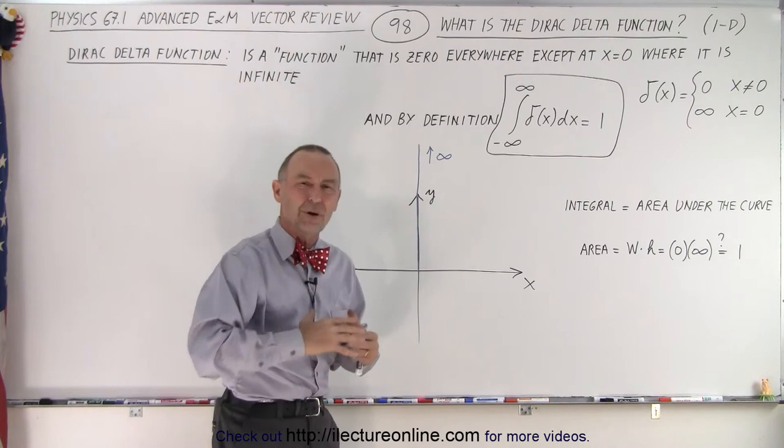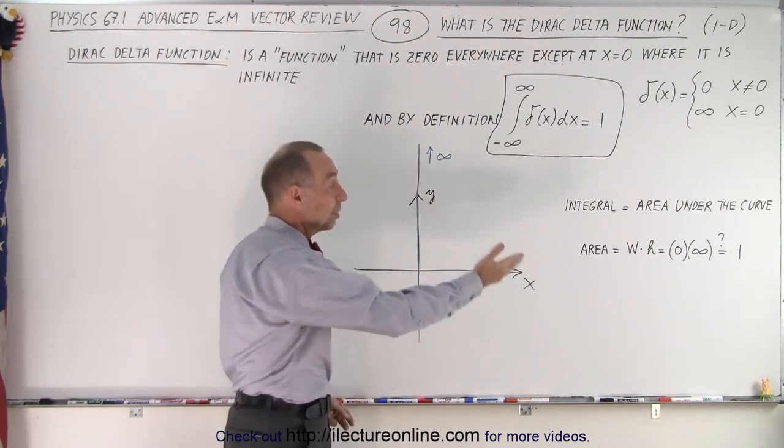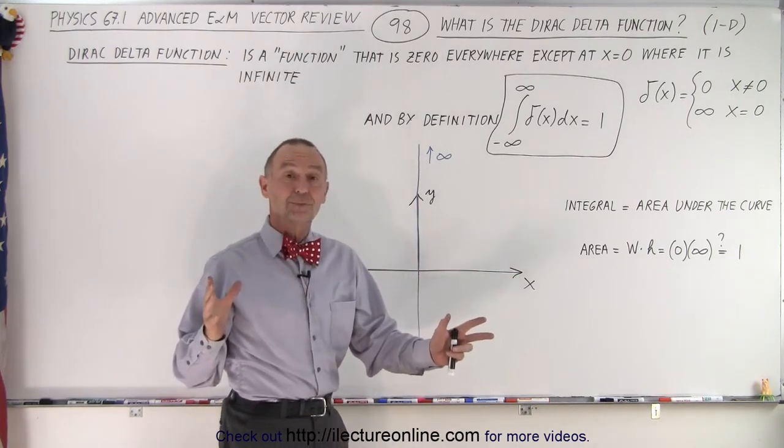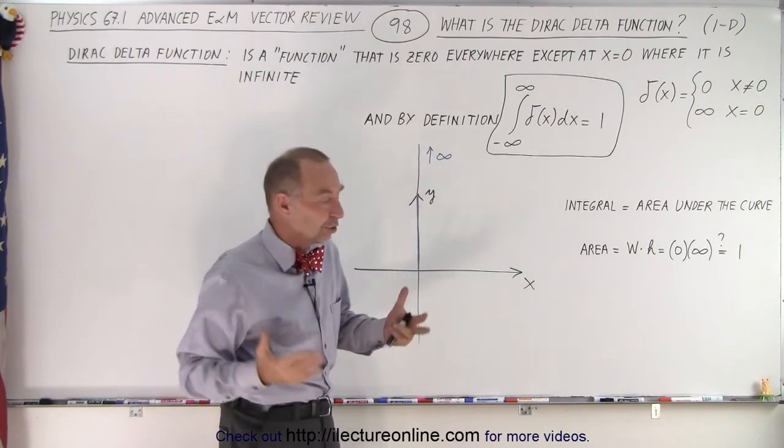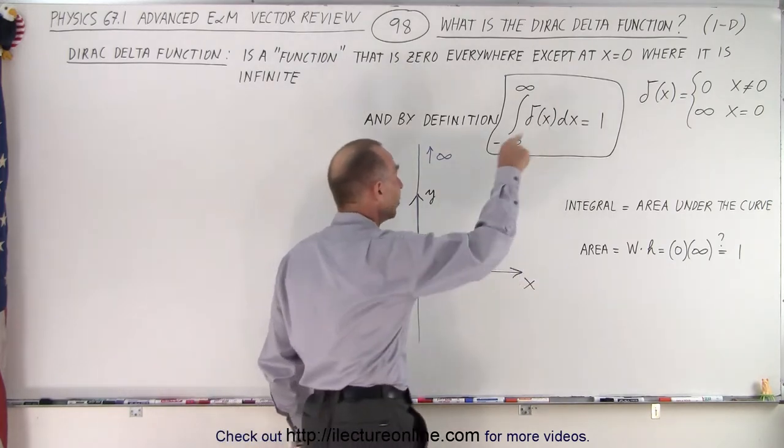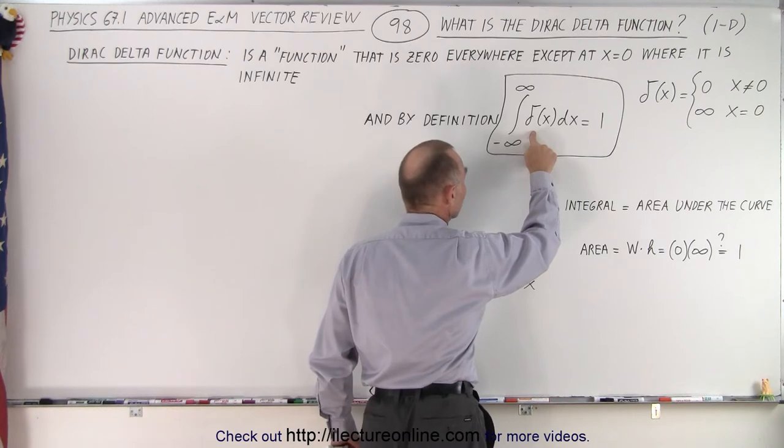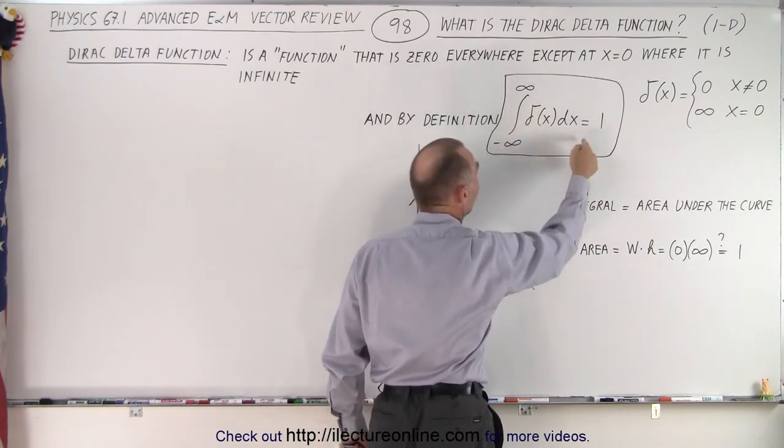We just need to get over that problem by simply accepting it. It's just a definition. By definition, the integral of the delta function from minus infinity to infinity equals 1.